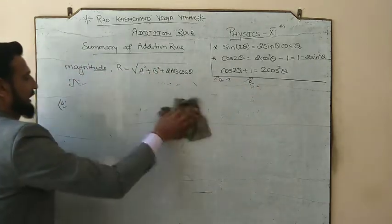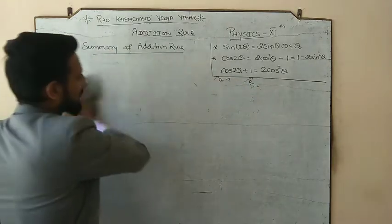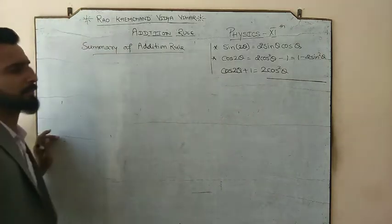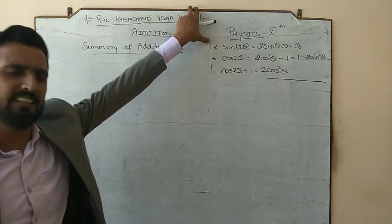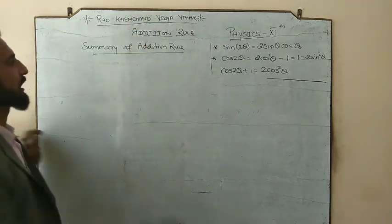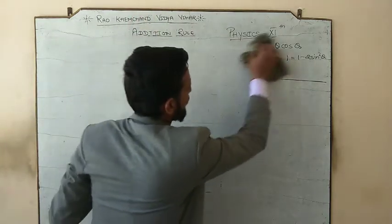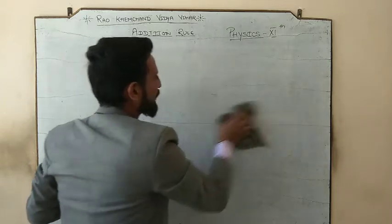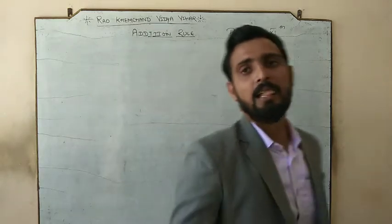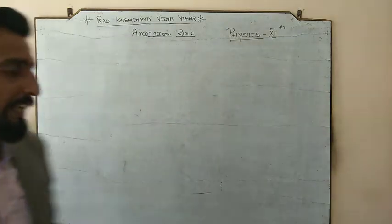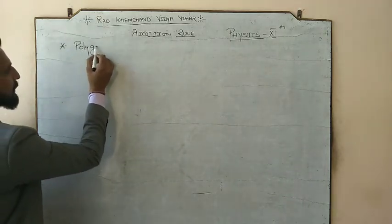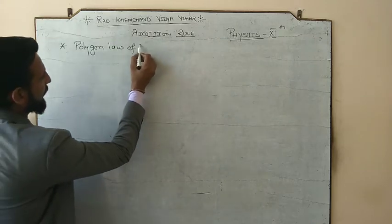Please note this, and non-medical and medical students can refer back to the trigonometry in the mathematical tools chapter. Here we have studied the summary and the important concepts, along with important direct formulas for both the triangle and parallelogram laws. Now we have the last addition rule: the polygon law of vector addition.